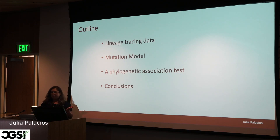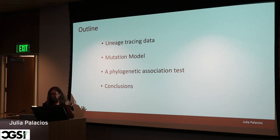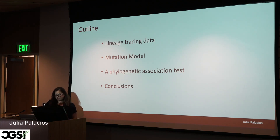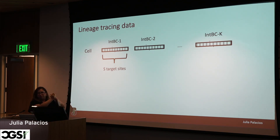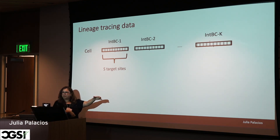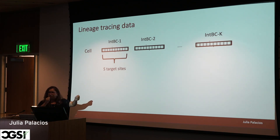The data consists of K integration barcodes. A single cell can have many barcodes, and you place these barcodes in very separated regions of the genome so that they can be treated as independent. They will evolve independently, and conditioning on the tree they will be independent.